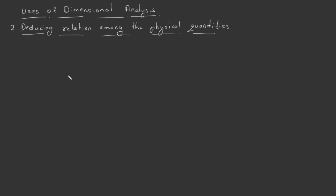Welcome to a new session. Today we are going to study another use of dimensional analysis: deducing relations among physical quantities. You can derive an equation using dimensional analysis if you know the dependence of the physical quantity on other quantities and consider it as a product-type dependence. We will explain this more in this section. First, we are going to derive an expression for the time period of a simple pendulum.